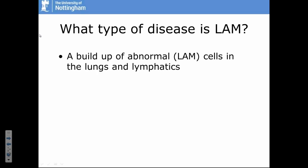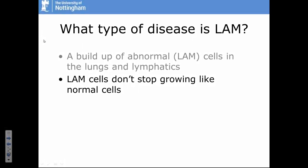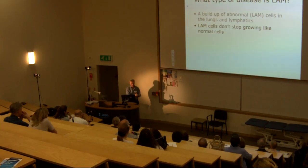What happens in the lungs and lymphatic tissue of women with LAM is that an abnormal type of cell called LAM cells builds up in the lungs and lymphatic tissue. These LAM cells don't stop growing like normal cells. Normal cells, when they're performing their function, stop dividing. LAM cells don't seem to have that check on their growth — they keep growing, get in the way, cause various problems, and damage the structure of the lungs.